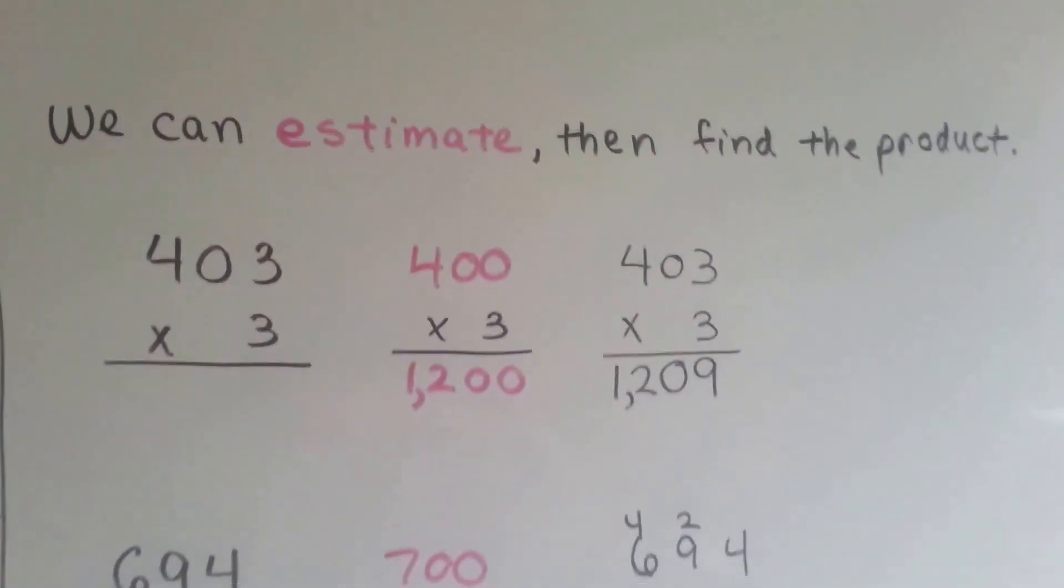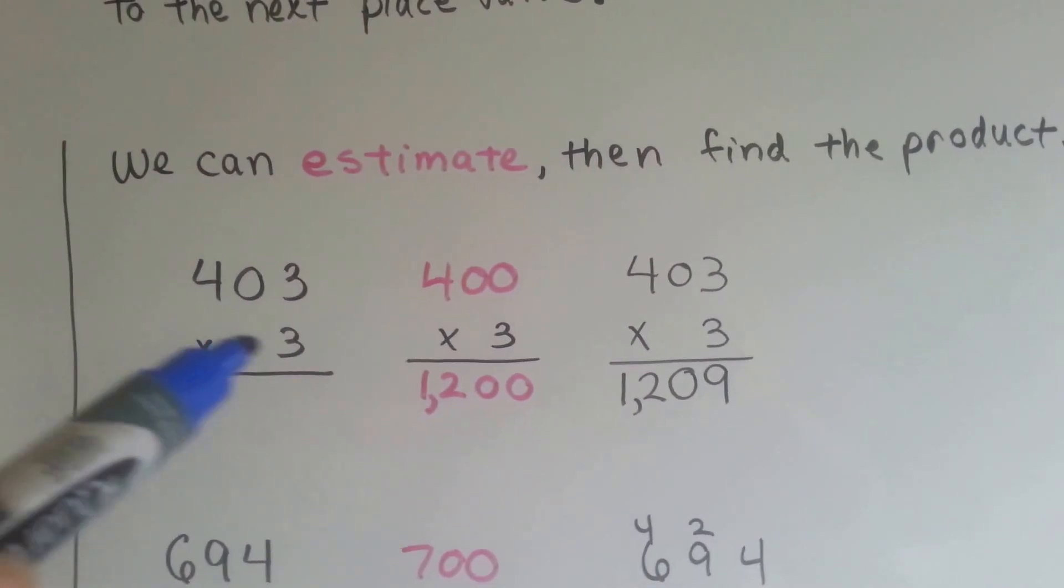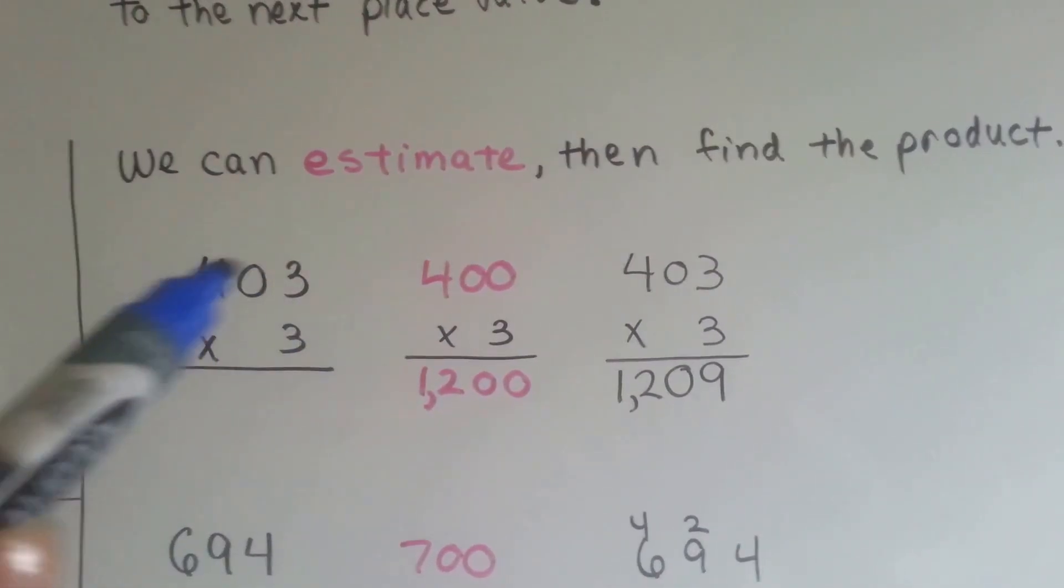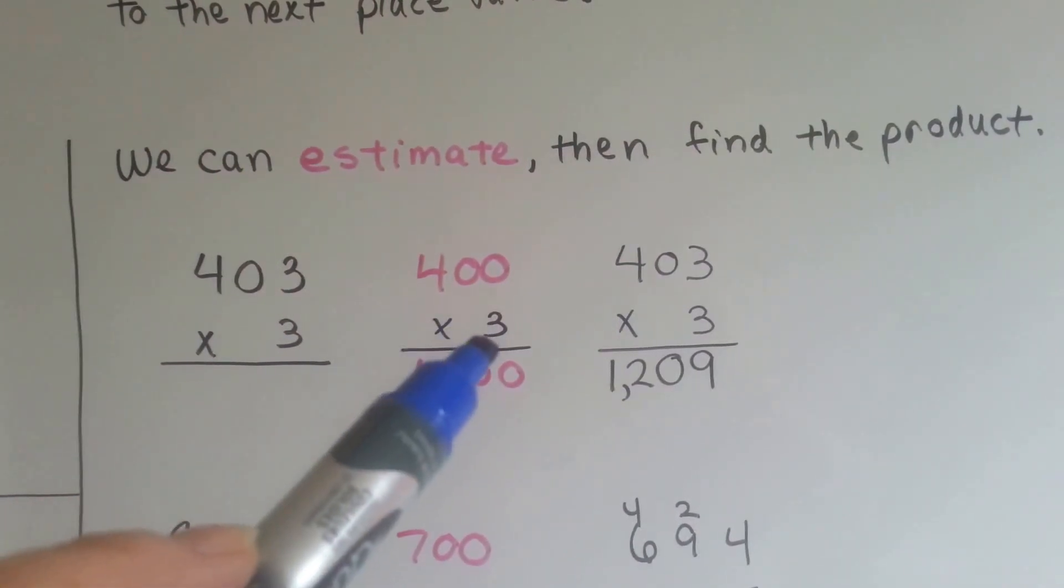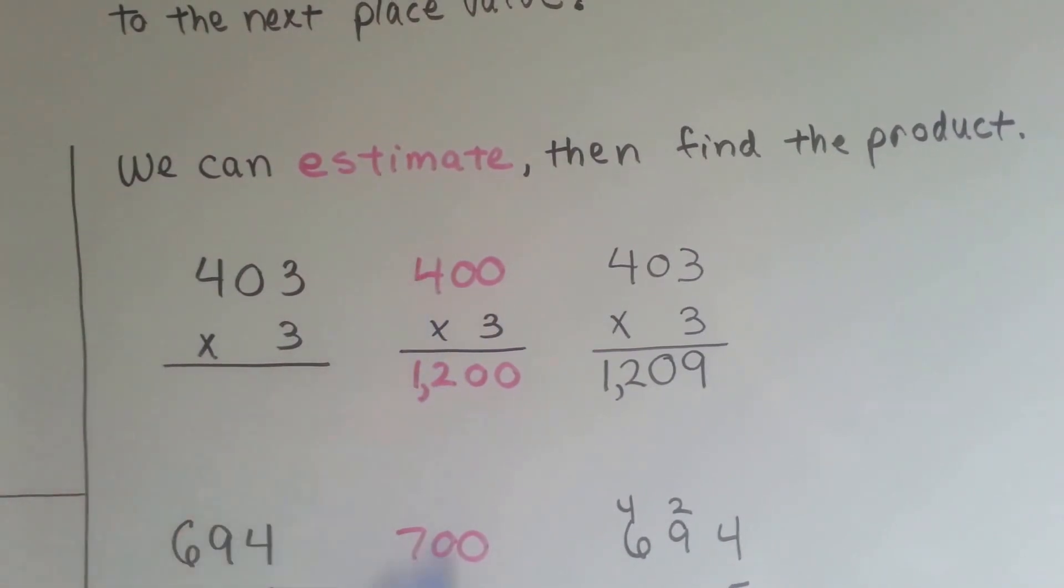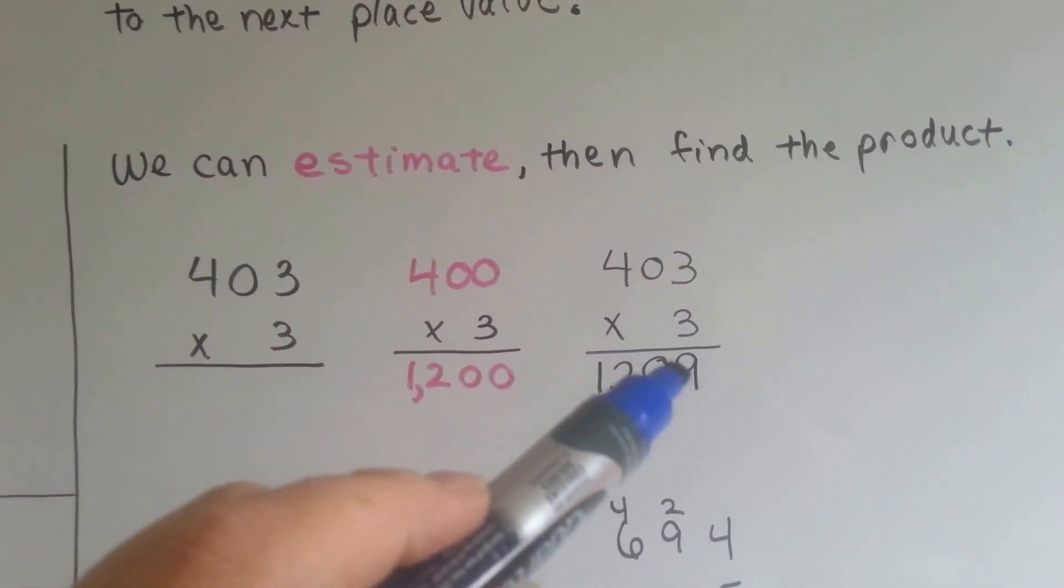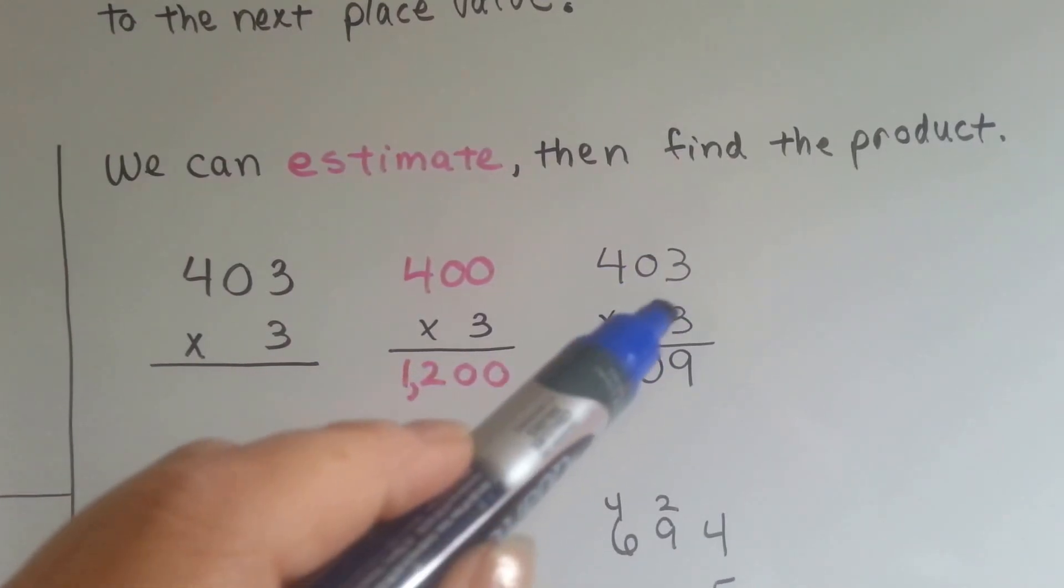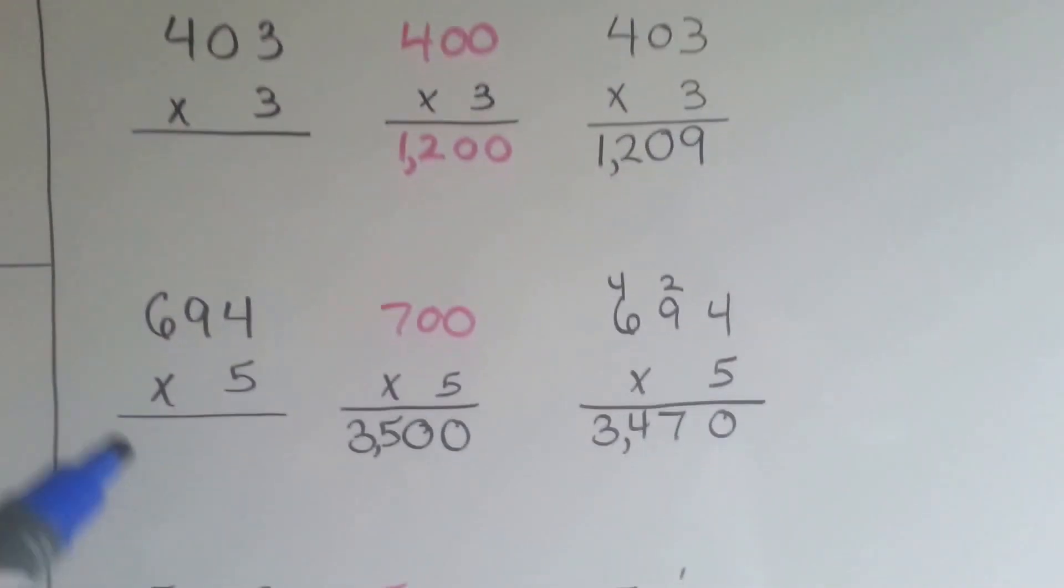We can estimate and then find the product. If the problem is 403 times 3, 403 can be rounded to 400. 400 times 3 is 3 times 0 is 0, 3 times 0 is 0, and 3 times 4 is 12. Doing the ones, we do 3 times 3 is 9, 3 times 0 is 0, and 3 times 4 is 12.